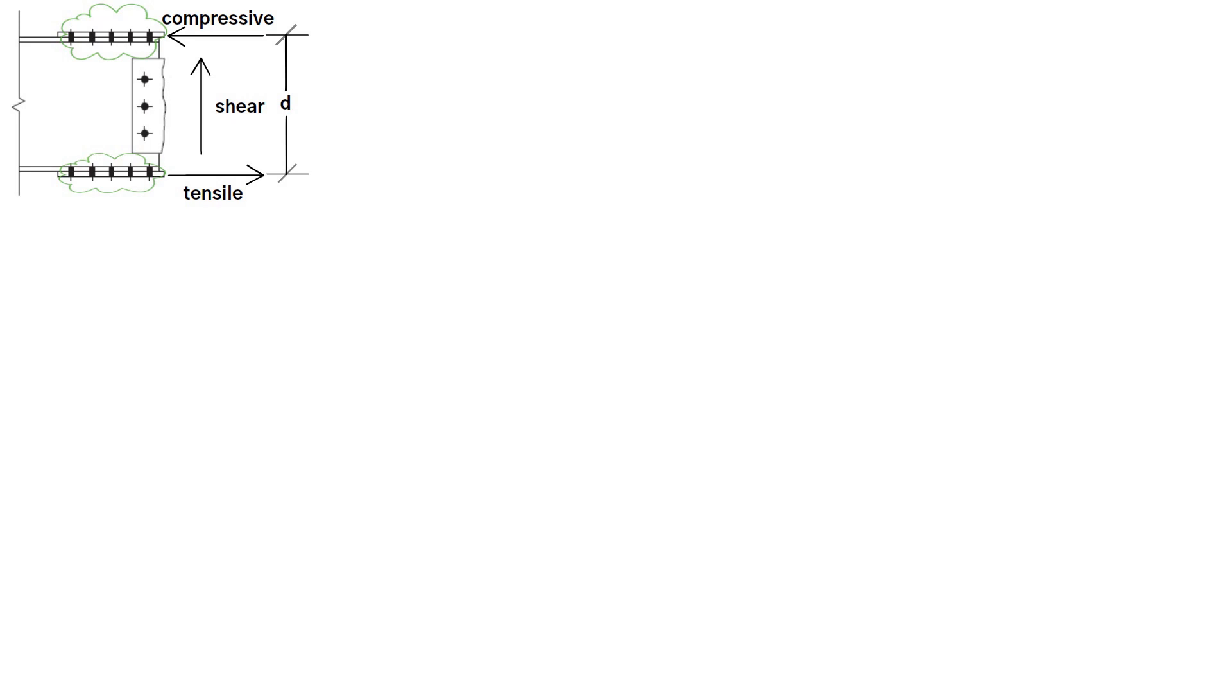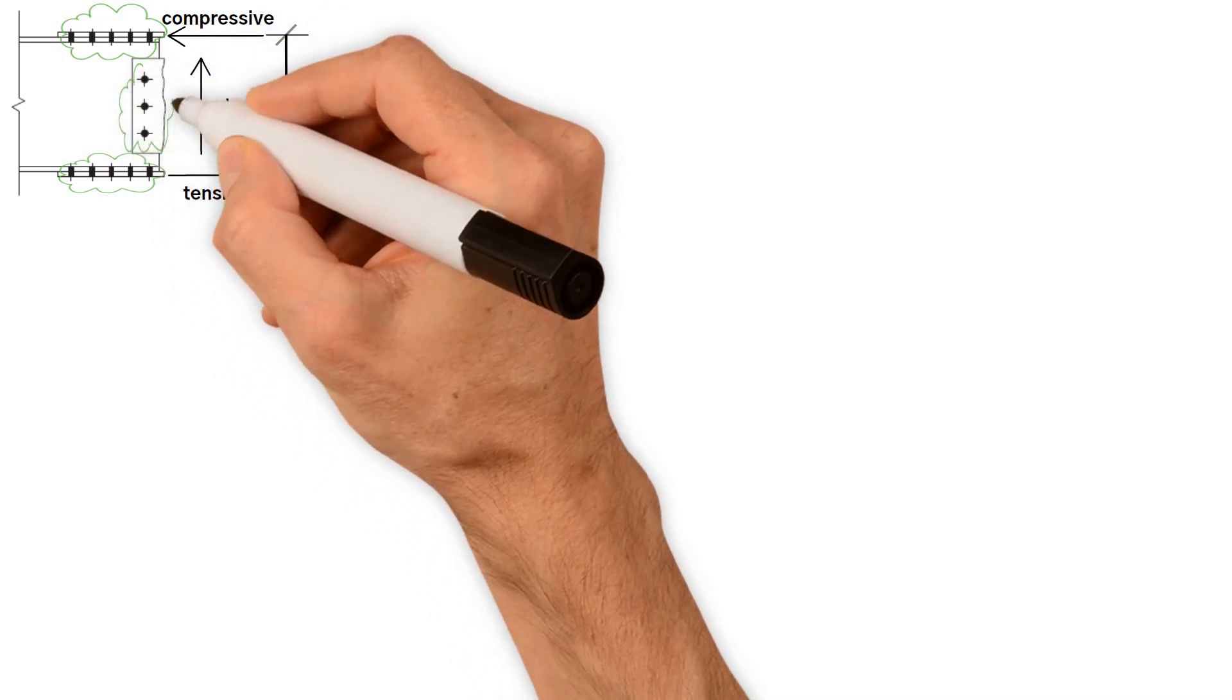Transmit the flange plate loads to the beam flange. This of course puts a shear load on the bolts. Similarly, there must be sufficient bolts in the web plate to transmit the shear force.